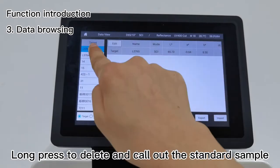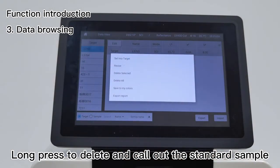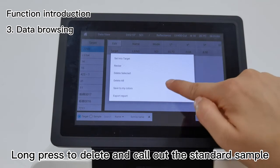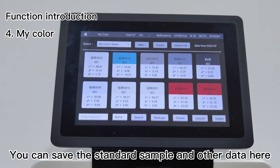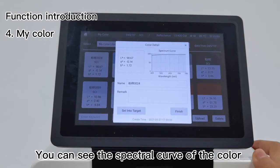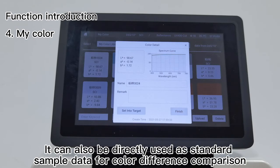Module 4 - My Colors: You can save the standard sample and other data here. You can see the spectral curve of the color. It can also be directly used as standard sample data for color difference comparison.